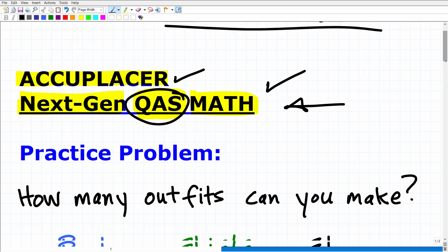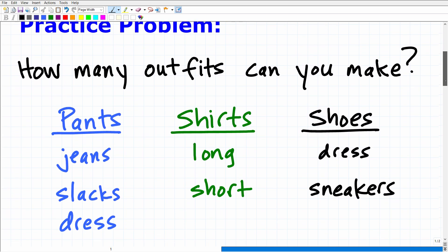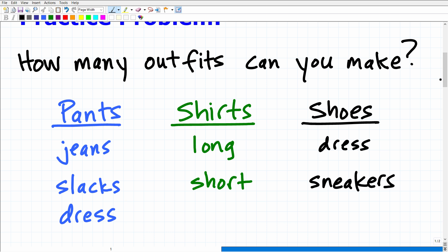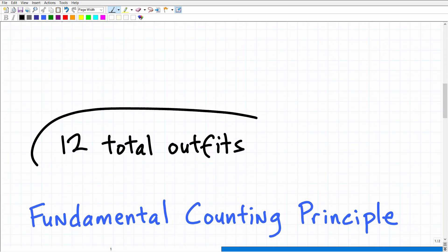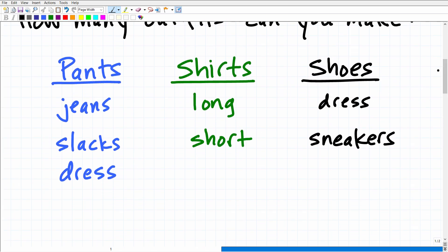All right. So let's go ahead and get into this problem. How many outfits can you make given the following? You can choose from one of three pants. You have two shirts to select from and two types of shoes to select from. So given that scenario, you can make 12 total outfits.